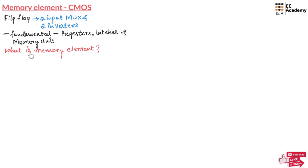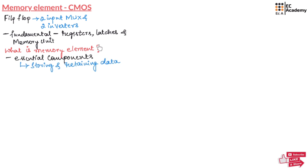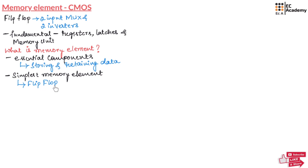First, let us understand what a memory element is and why these memory elements are crucial in digital circuits. In digital circuits, memory elements are essential components used for storing and retaining data. One of the simplest memory elements we can construct using a basic CMOS structure is a flip-flop, and in this video we will focus on a flip-flop design that uses a two-input multiplexer and two inverters.